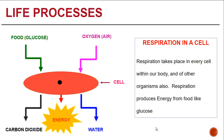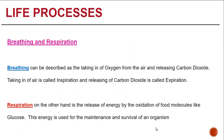Take a look at the diagram showing a cell. We have food in the form of glucose and oxygen breathed in through the air, entering into the cell within our body. As respiration takes place inside the cell, the oxygen and food are utilized, and as a result, energy is released along with carbon dioxide and water.